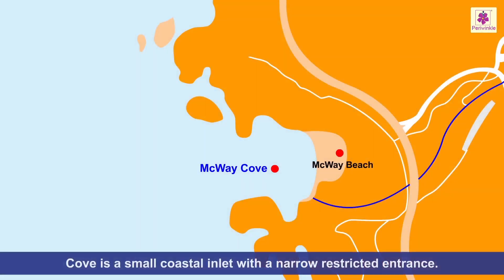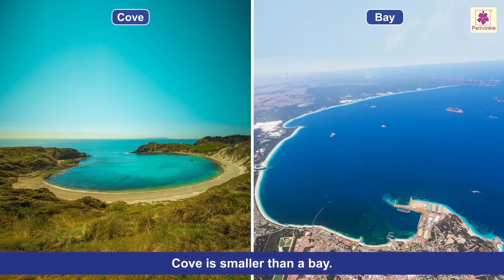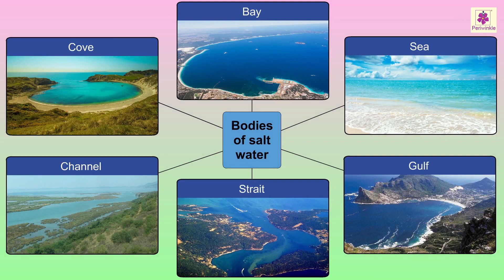A cove is a small coastal inlet with a narrow restricted entrance. It is smaller than a bay. These are all bodies of salt water.